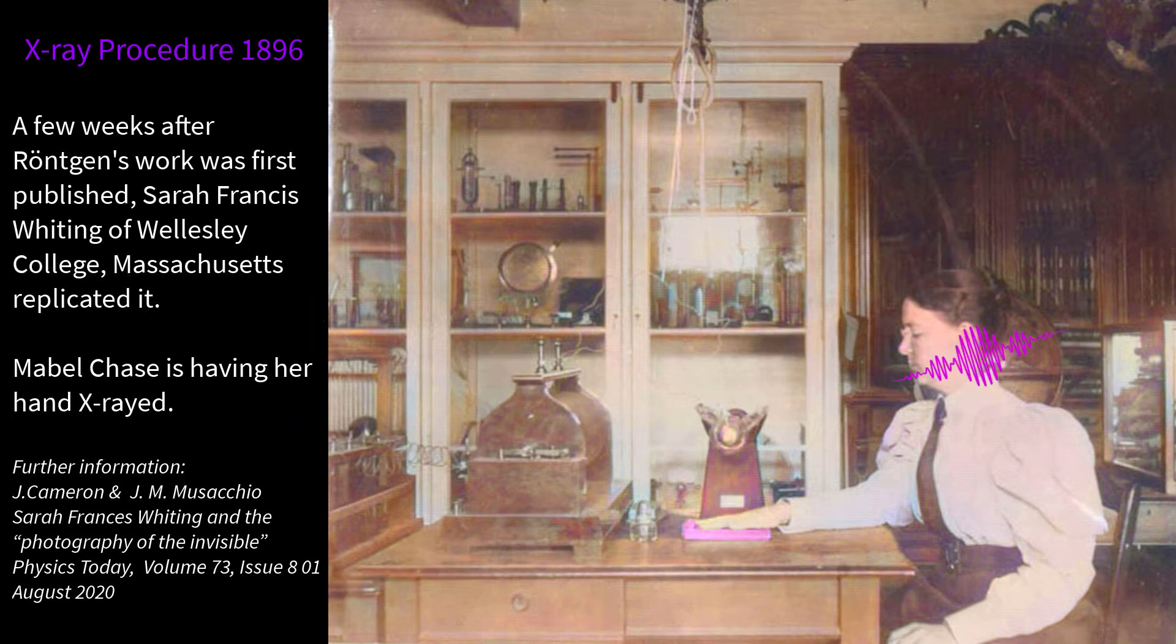Some of them go downward and pass through the hand. The bones block far more rays than the fleshy part does, so the photographic plate covered with cardboard below the hand produces an X-ray photograph showing the bones.